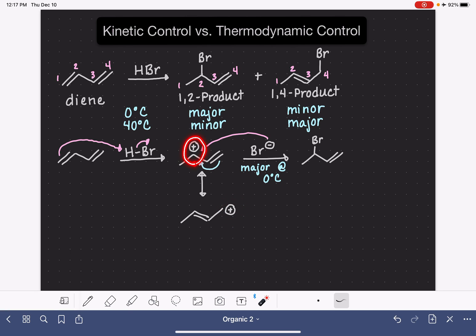so it is not as stable as our secondary allylic carbocation, but because we are operating at high temperatures, the system has the energy to form this less stable carbocation.